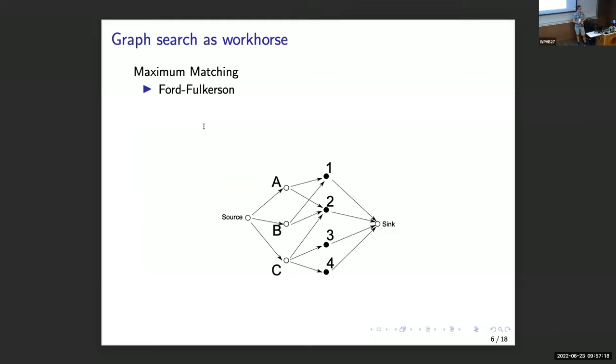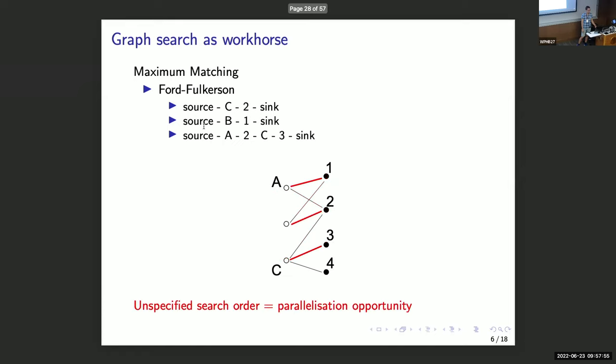So the first thing we should notice is that graph search in this algorithm is our workhorse. Take the maximum matching. You can use Ford-Fulkerson for that. And Ford-Fulkerson works by finding augmenting paths one by one. You start from a variable and you work your way through to the sink. These augmenting paths are found every time by graph search, and you can use depth-first search or breadth-first search for that. It doesn't really matter in which order you traverse the graph. And this is also our chance for parallelization.